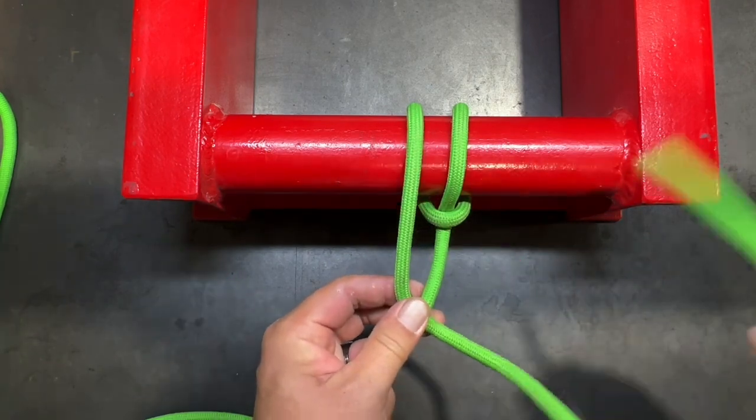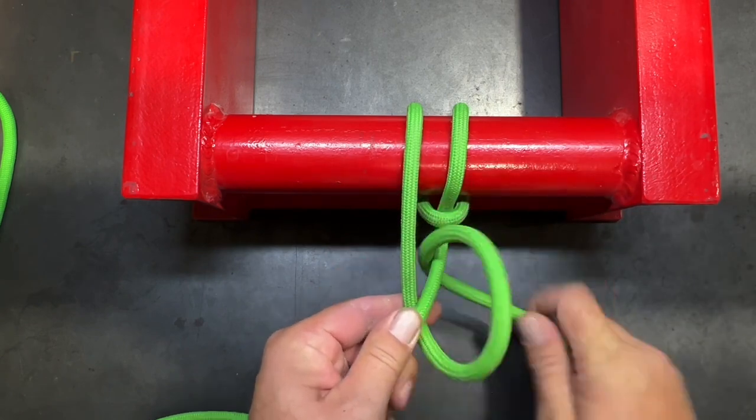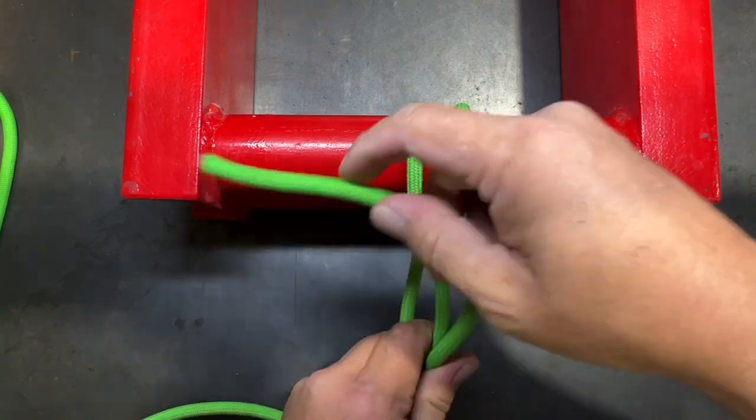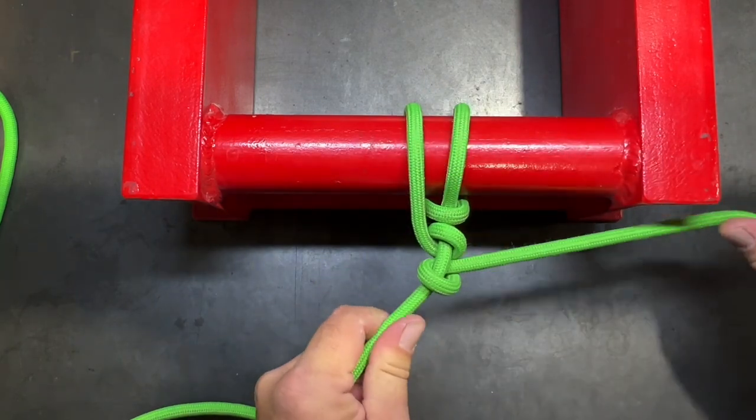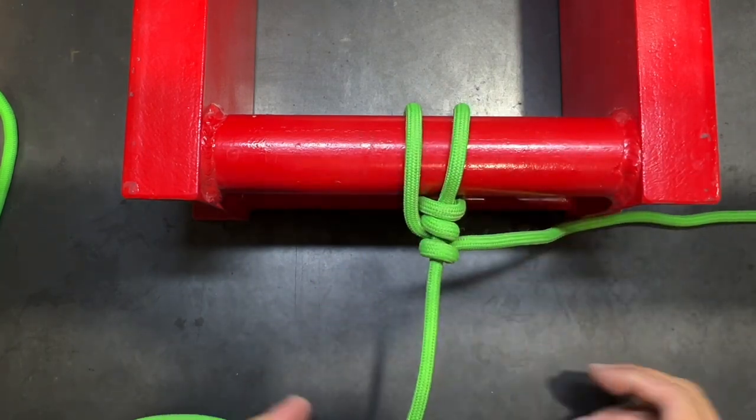And then you finish this one by tying a clove hitch here to the standing end of the rope. So we'll go ahead and finish this one off and that is the backhand hitch.